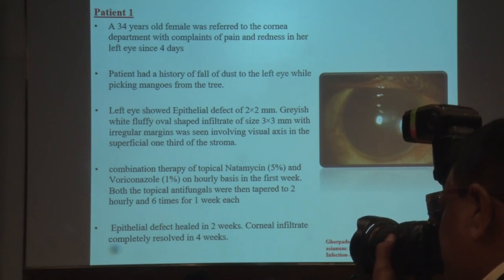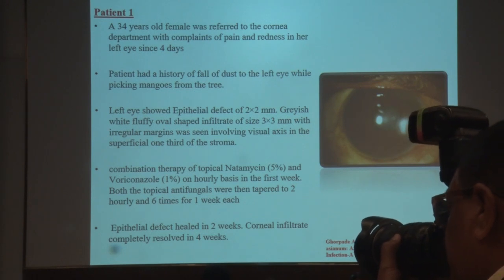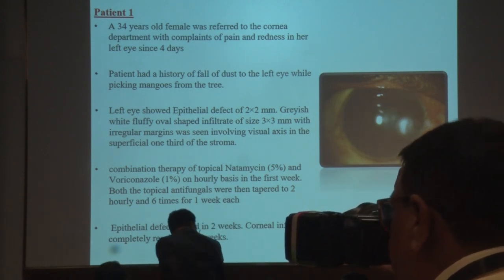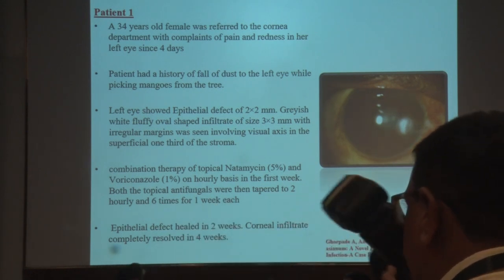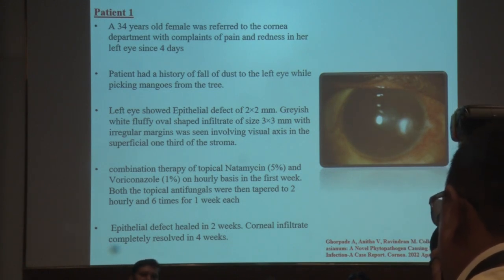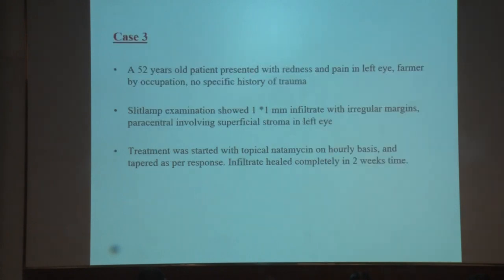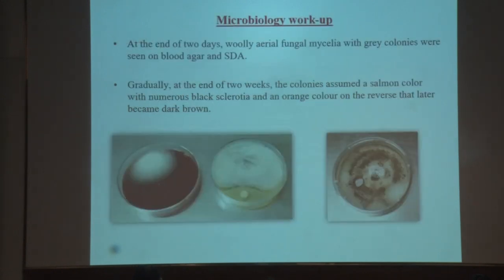Case 1 showed an epithelial defect of 2×2 mm with infiltrate of 3×3 mm in the superficial stroma. Microbiological workup revealed fungal filaments on KOH mount. Treatment with topical natamycin 5% and voriconazole 1% on an hourly basis in the first week, then tapered, led to healing of the epithelial defect in two weeks and complete resolution of corneal infiltrate in four weeks. Case 2 had a similar 2×2 mm epithelial defect and 4×4 mm infiltrate, also with a history of tree branch injury, which resolved with the same combination therapy.